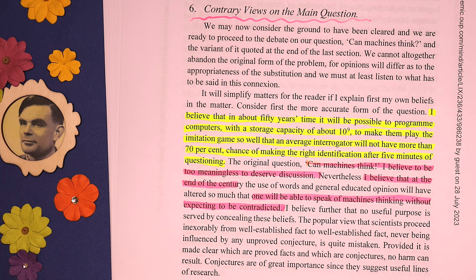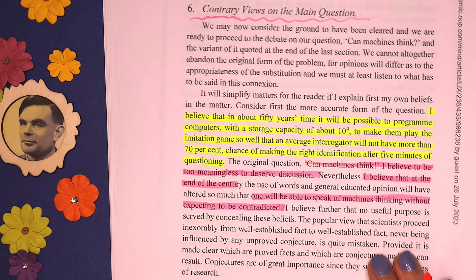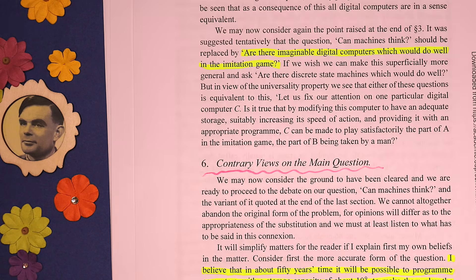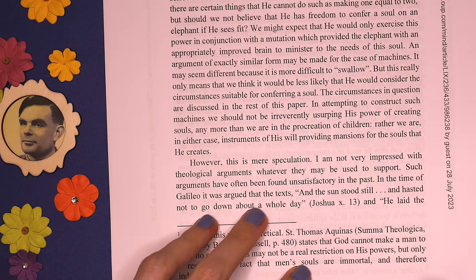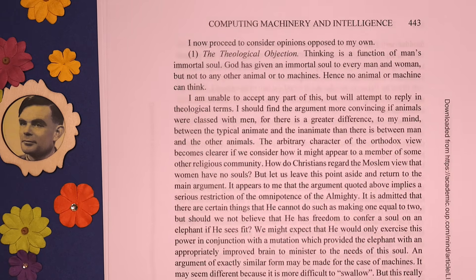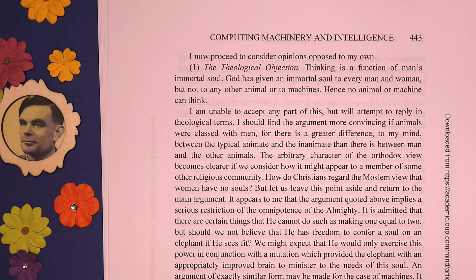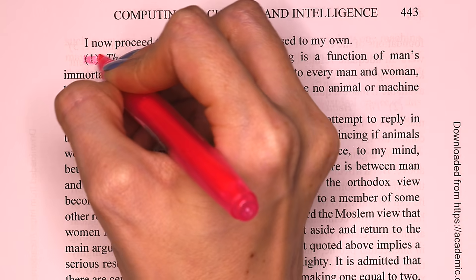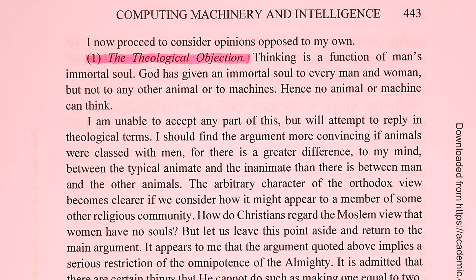Turing doesn't have a lot of evidence to back up his claim, so instead he tries to imagine every possible objection someone could have to say machines will never think. He comes up with nine objections. The first is: maybe you can make an impressive machine, but it will never be able to think because thinking is a function of a human's immortal soul. Turing is not impressed with this argument and basically says that if God is almighty, he can give a soul to whoever or whatever he wants — an elephant, or a machine.